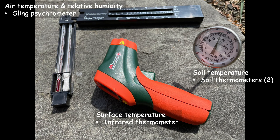We have an infrared thermometer for surface temperature, two soil thermometers for soil temperature at two depths, and a sling psychrometer that will give us the air temperature and allow us to calculate the relative humidity and dew point.